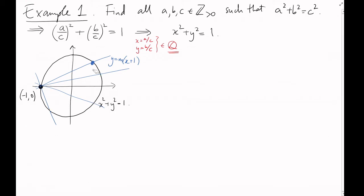Now, we want the second point of intersection to give us a rational point on the circle. That is, a point with rational x-coordinate and rational y-coordinate. Well, if both x and y are rational, then m, which is just y over x plus 1, had better be rational as well. So, let's insist that m should be rational.